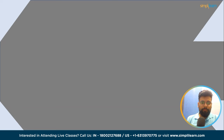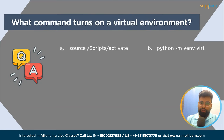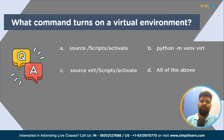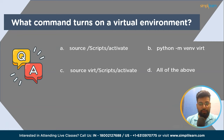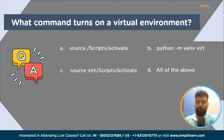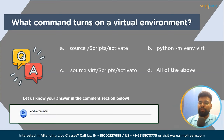Now, let us have a simple question to brush up on our knowledge. What command turns on a virtual environment? Option A: source slash script slash activate. Option B: python -m venv and the name of the folder. Option C: source virtual slash scripts slash activate. Or D: all of the above. Please answer in the comment section below and we will update the correct answer in the pinned comment. You can pause the video, give it a thought, and answer in the comment section.